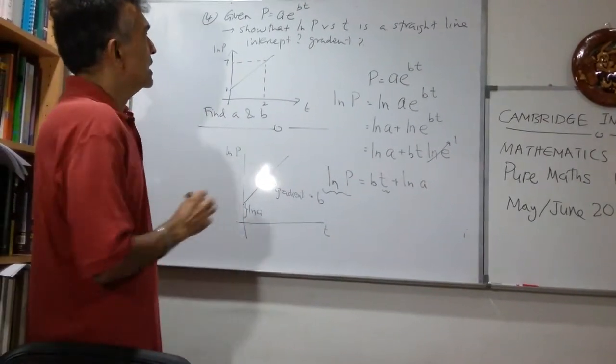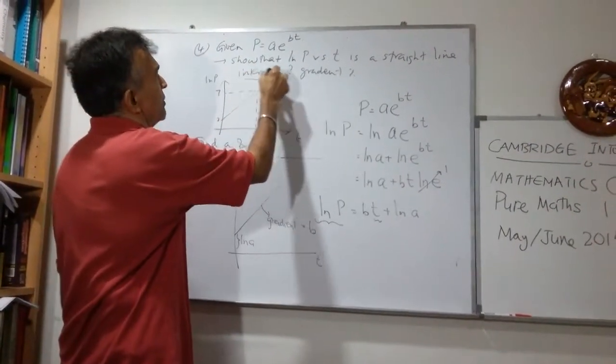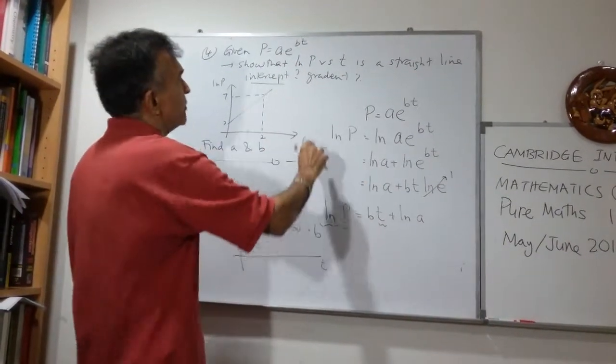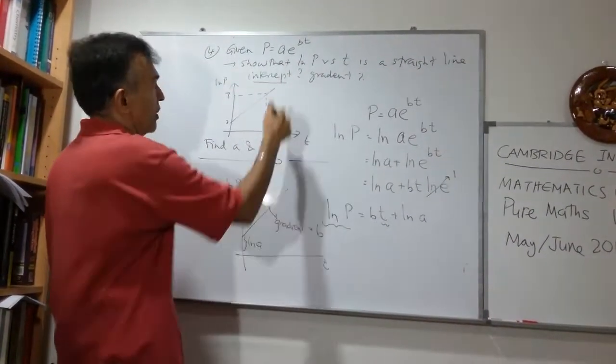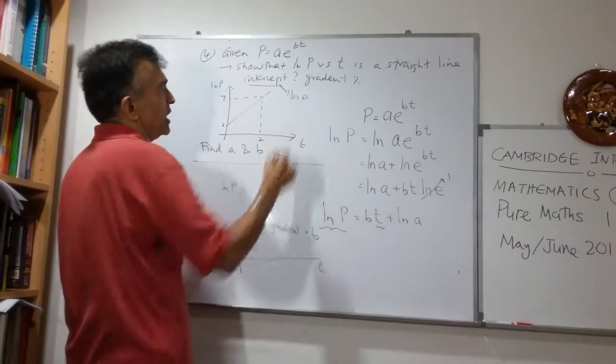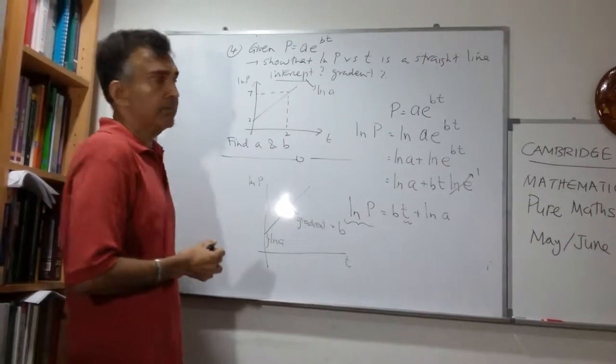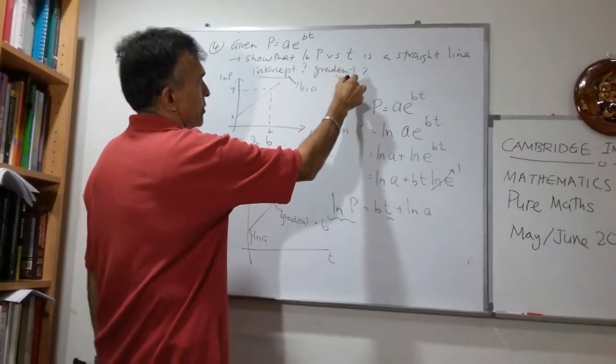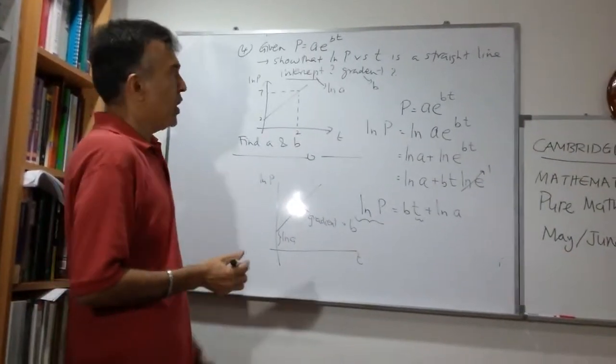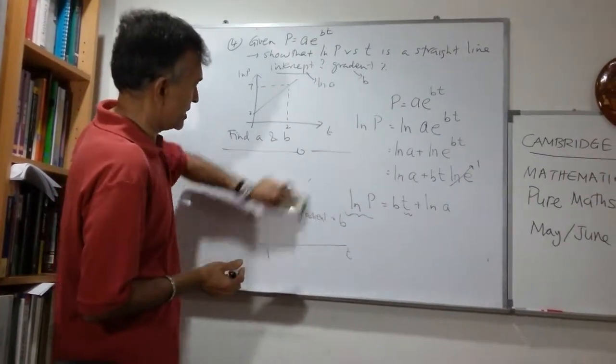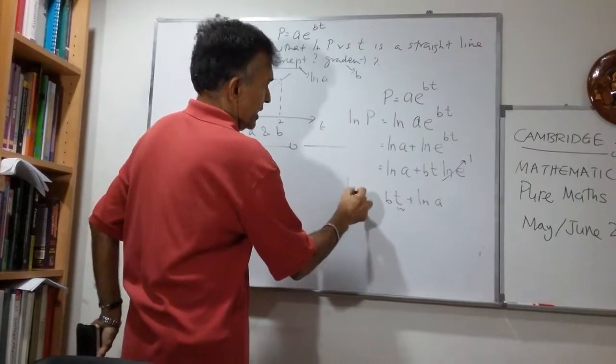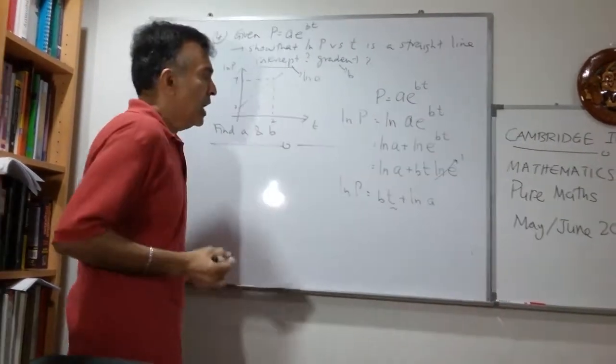Now, the intercept, we have shown that, we've already done that. Log P versus T is a straight line. The intercept is log A. Let me write that here. Log A is log A to base E. And then the gradient will be B. We don't need this, so let me erase that.